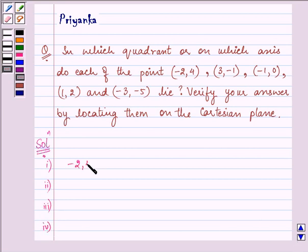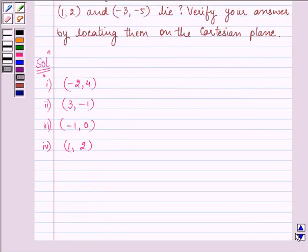Point i is (-2, 4), point ii is (3, -1), point iii is (-1, 0), point iv is (1, 2), and the fifth point is given to us as (-3, -5).